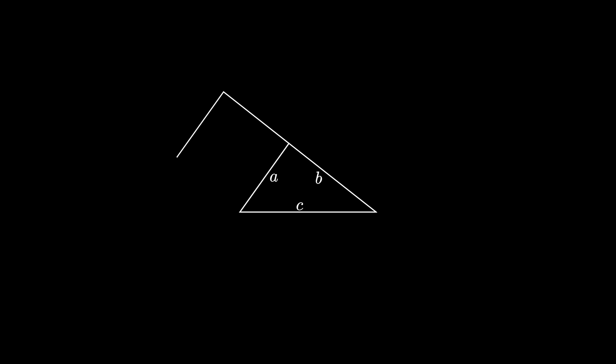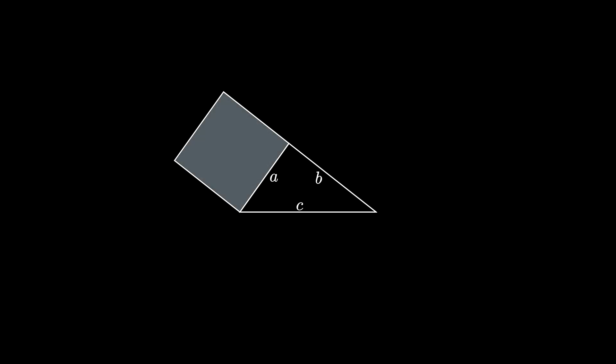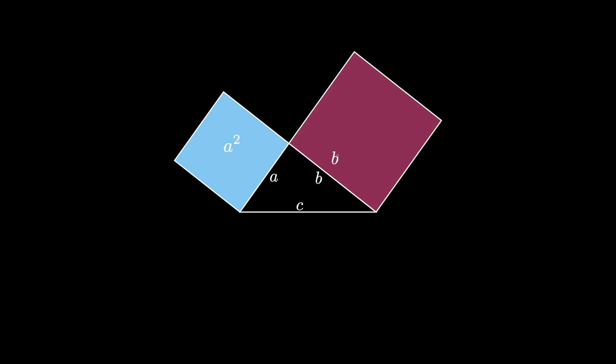We can draw a square off the leg of length A, and this square encloses an area of A times A or A squared. Similarly, we can draw a square off the leg of length B enclosing an area of B squared. We can also draw a square off the hypotenuse, and this has an area of C squared.